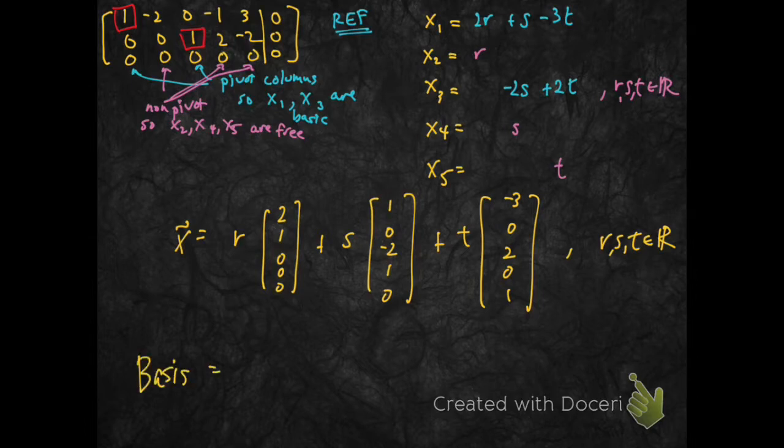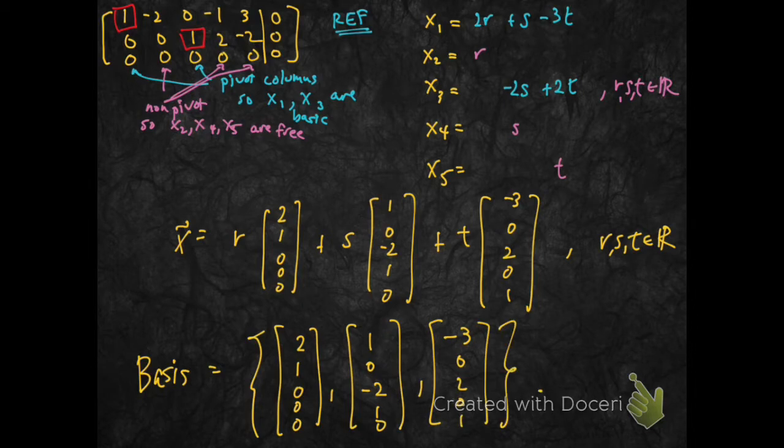And so that means a basis for the null space of this matrix is just those three vectors: [2, 1, 0, 0, 0], [1, 0, minus 2, 1, 0], and [minus 3, 0, 2, 0, 1].